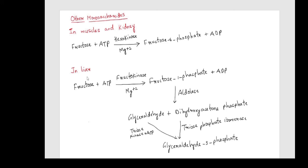In liver, this pathway is a bit different where fructokinase acts on fructose to give fructose-1-phosphate where aldolase acts on it and gives each molecule of glyceraldehyde and dihydroxyacetone phosphate.